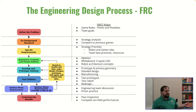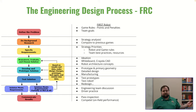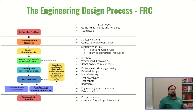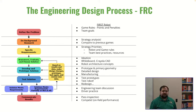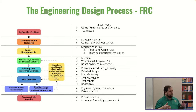In FRC, what defines our problem is the game rules — the points, penalties, how we rank — and then our team goals: what are we trying to achieve competitively on the field? The answer to what problem we're solving is different if we're building a robot to compete at the highest levels of the world championship versus just trying to qualify for a district championship. Background research is where strategic analysis comes in — comparisons to previous games and robots that solve similar challenges.